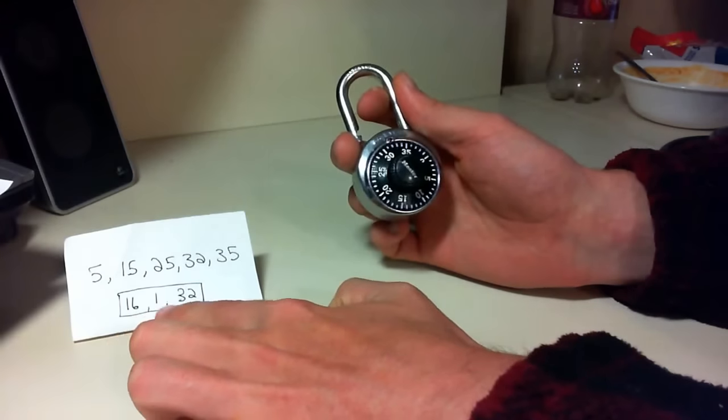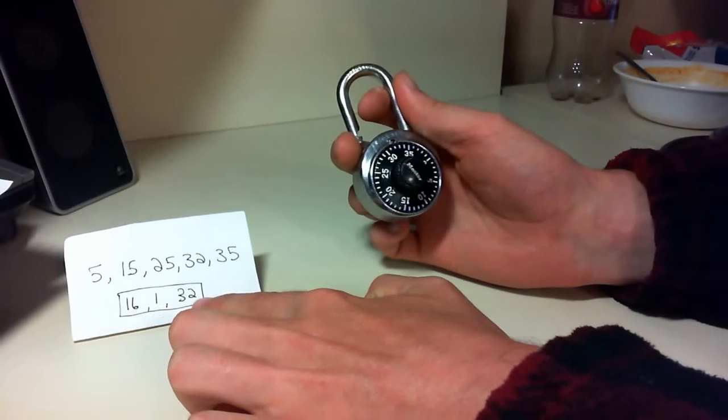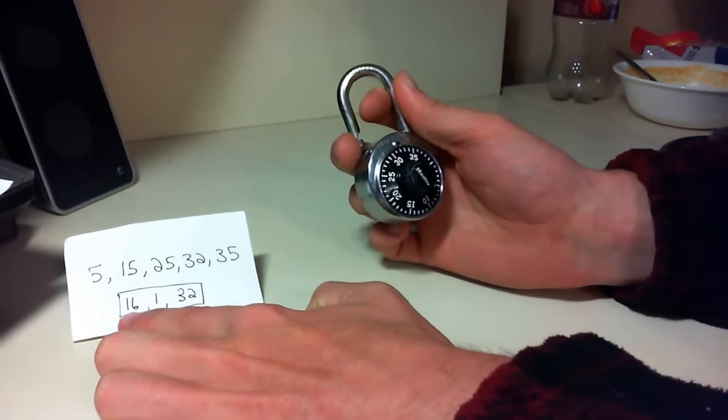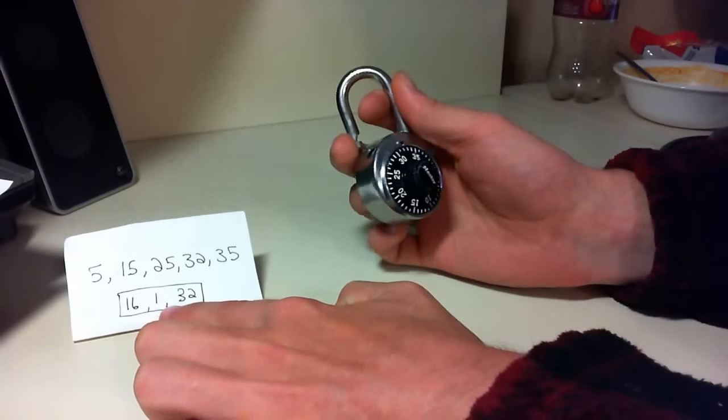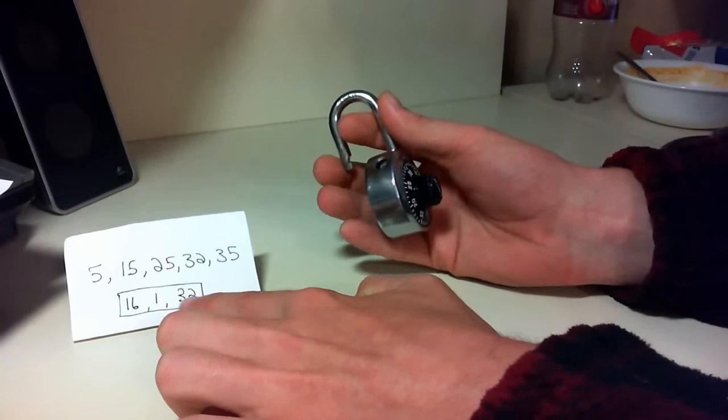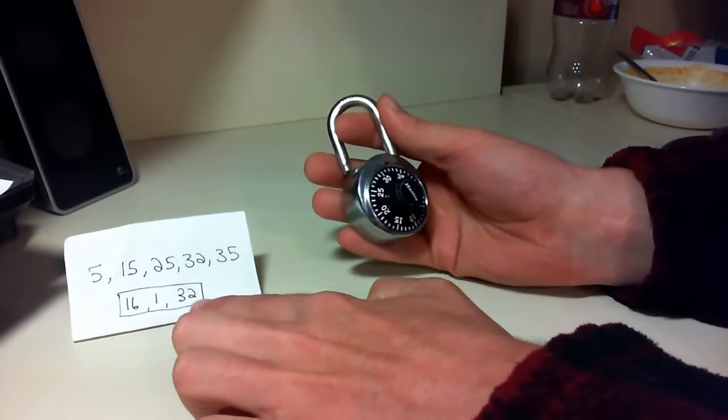But you might try modifying the first two numbers by a single digit up or down. So you'd try 15, 1, 32, or 14, 1, 32, and then try 16, 2, 32, or 16, 30, 32, or rather 16, 40, 32.